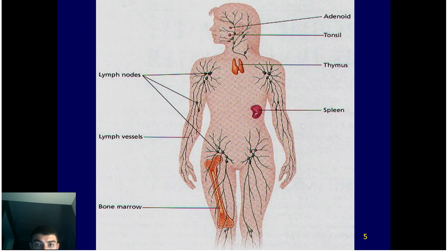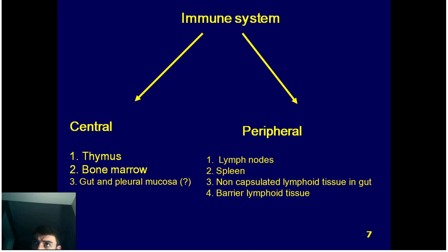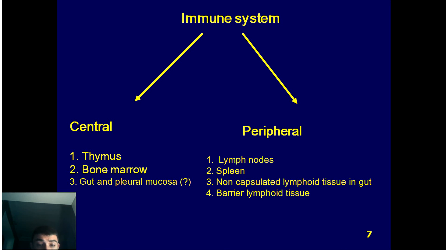Here we see the distribution of the immune system. It makes sense that the system is distributed all over the body to make possible contact with a pathogen as soon as possible. We differentiate central organs of the immune system, usually considering bone marrow and thymus as central organs, while the others are considered peripheral organs. This differentiation depends on whether antigen-dependent maturation takes place or not. In the thymus and bone marrow we have antigen-independent maturation of T cells. Some authors suggest that in the gut and pleural mucosa we might also have antigen-independent development of lymphocytes.